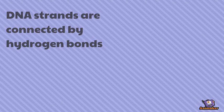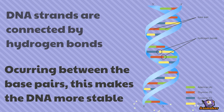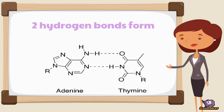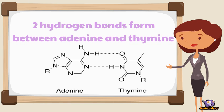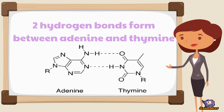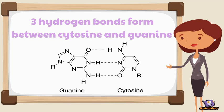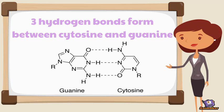DNA strands are connected by hydrogen bonds occurring between the base pairs, and this makes the DNA more stable. Two hydrogen bonds form between adenine and thymine, while three hydrogen bonds form between cytosine and guanine.